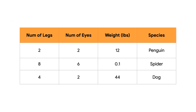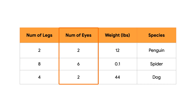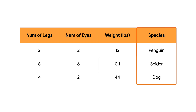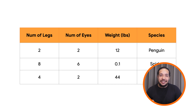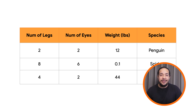Take this example of a tabular data set. It has the number of legs, number of eyes, and weight of different animals like a penguin, spider, and a dog. On our data, you can properly predict the type of animal using only a sequence of yes or no questions.